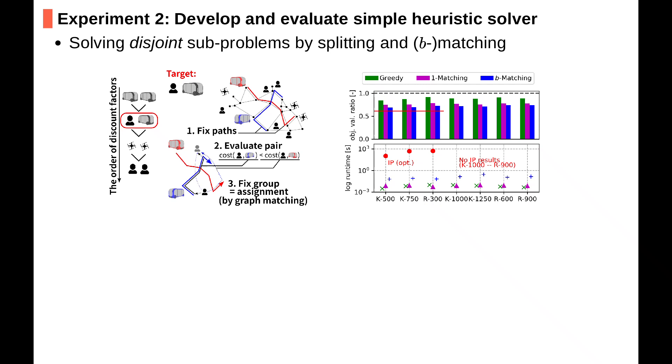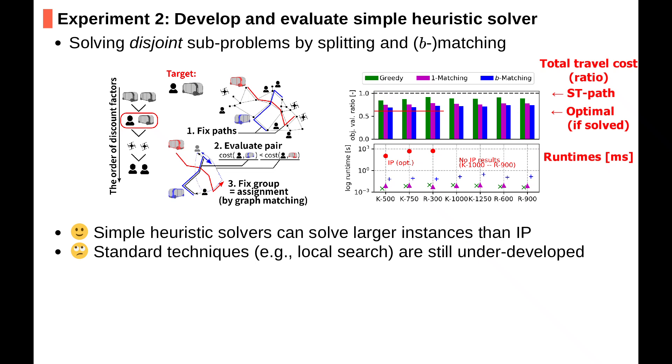Last, we divide problems using scores based on the pairwise evaluation using shortest paths. In comparison we prepare three variants of the third step: greedy, one matching, and B matching. The above chart shows the ratio of total travel costs and the below one shows runtimes. The dotted line shows the total travel cost of the shortest paths and the red line shows the optimal total travel costs obtained by IP solvers only for small instances. From experiments we know that simple solvers can solve much larger instances than the IP solver.